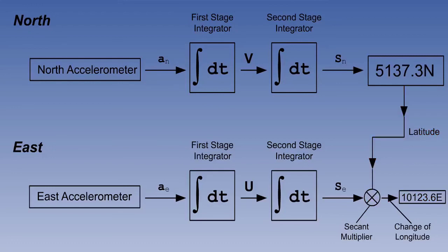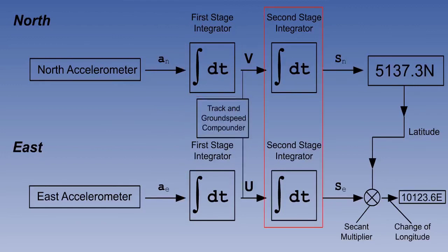Let's just sum up that data flow again, because we are going to use it to build on in a future lesson. We have a north and an east accelerometer. They sense every change of aircraft movement and pass it to first stage integrators. The first stage integrators continuously add up these accelerations, thereby converting them to velocities. The velocities are used to calculate track and ground speed, and they are also passed to second stage integrators, where they are converted to distance gone.